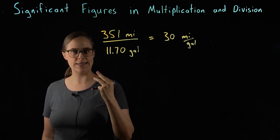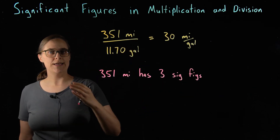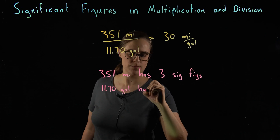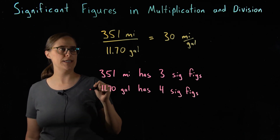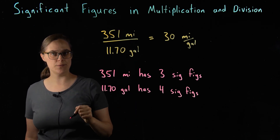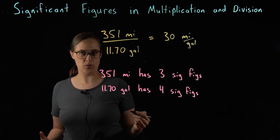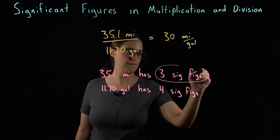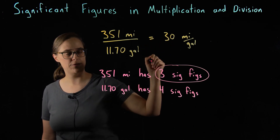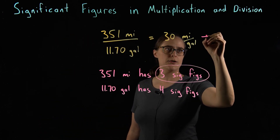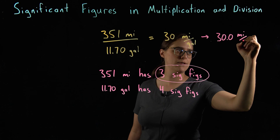351 has 3 significant figures. 11.70 has 4 significant figures. Our rule says the answer should have the same number of significant figures as whichever original number has the fewest — so 3 versus 4, and 3 is the lowest. Our answer, 30 miles per gallon, needs to be rewritten to have three significant figures. The correct answer for gas mileage is 30.0 miles per gallon.